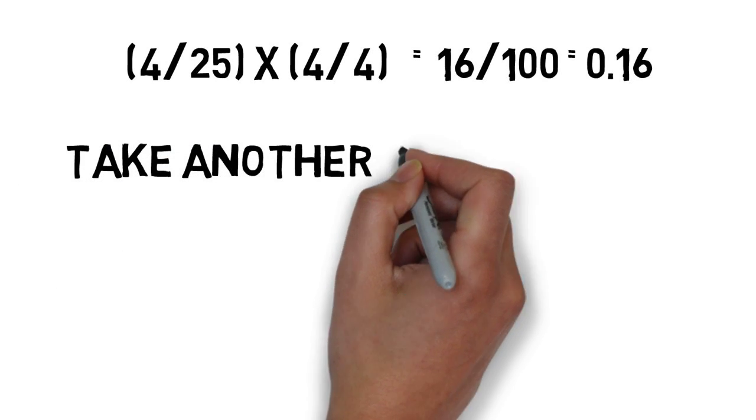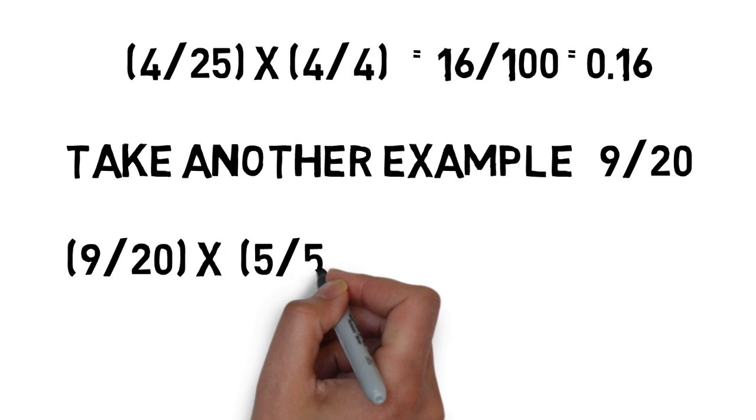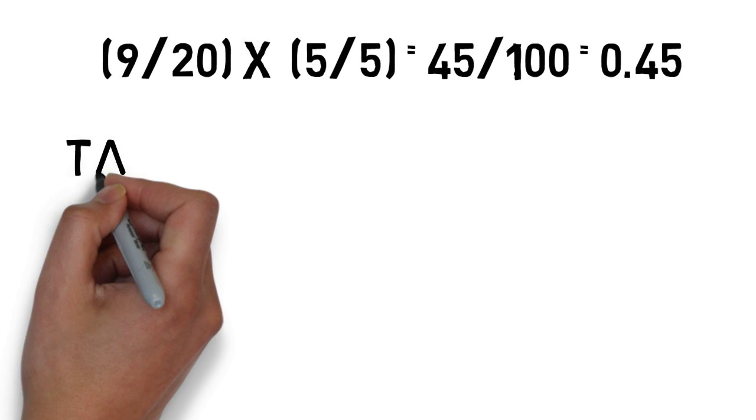0.16. Take one more example: 9/20, which becomes (9/20) × (5/5), which equals 45/100, which equals 0.45.